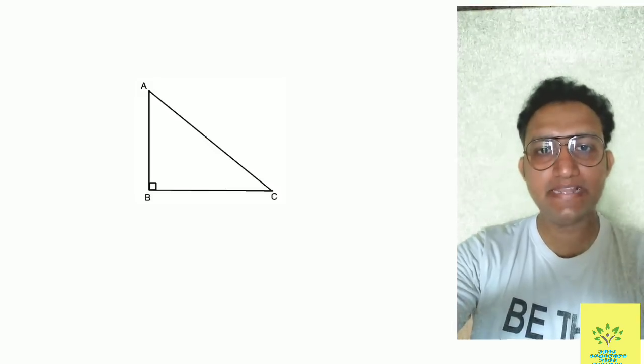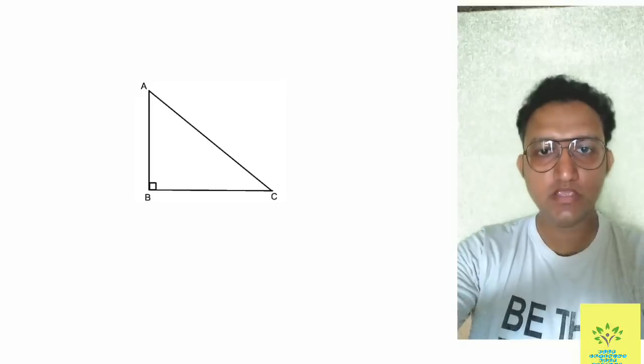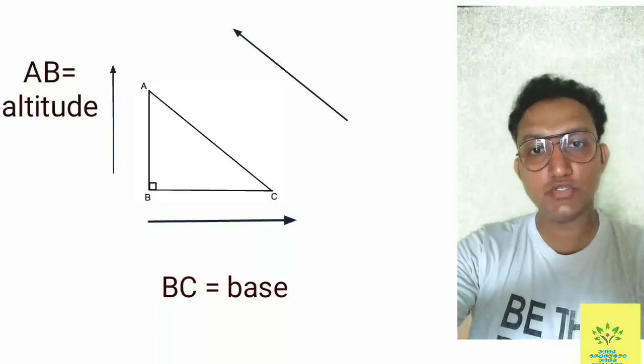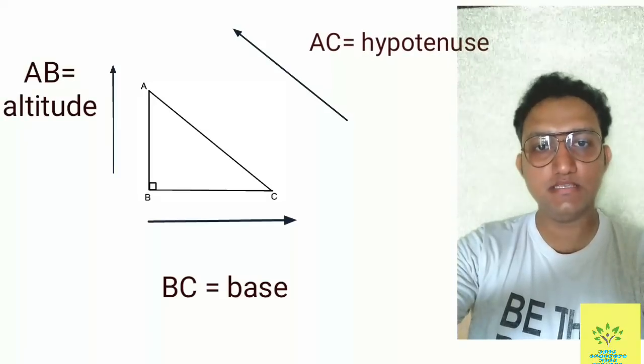Let us talk about right angle triangle ABC. Here, BC is the base, AB is the altitude, and line segment AC is the